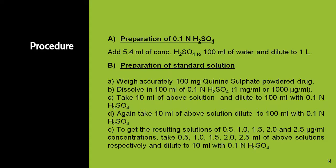From this 100 micrograms per ml solution, again take 10 ml and dilute to 100 ml with 0.1 normal H2SO4 to get 10 micrograms per ml. Now prepare the working standard solutions: 0.5, 1, 1.5, 2, and 2.5 micrograms per ml. In each 10 ml volumetric flask, take 0.5, 1, 1.5, 2, and 2.5 ml of the 10 micrograms per ml solution and dilute each to 10 ml with 0.1 normal H2SO4 to get the resulting working standard solutions.